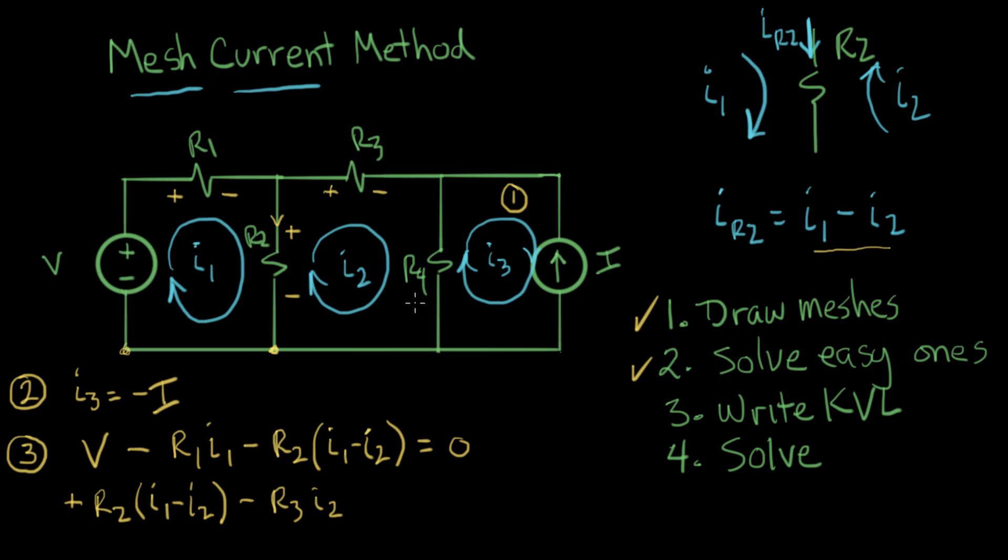Now we go over to R4. R4, this is the same thing with two currents that we had over here with R2, so we do the same thing again. This is going to be a voltage drop. There's the element current.